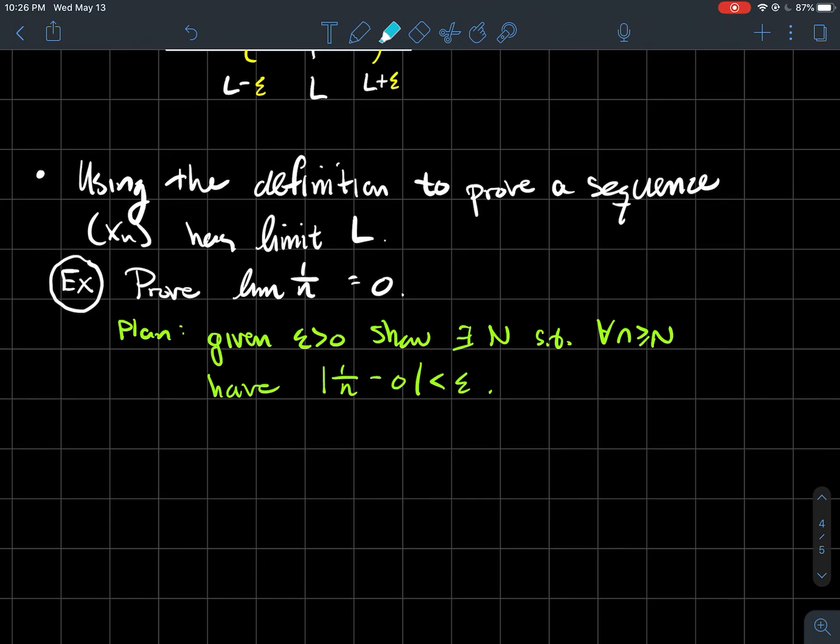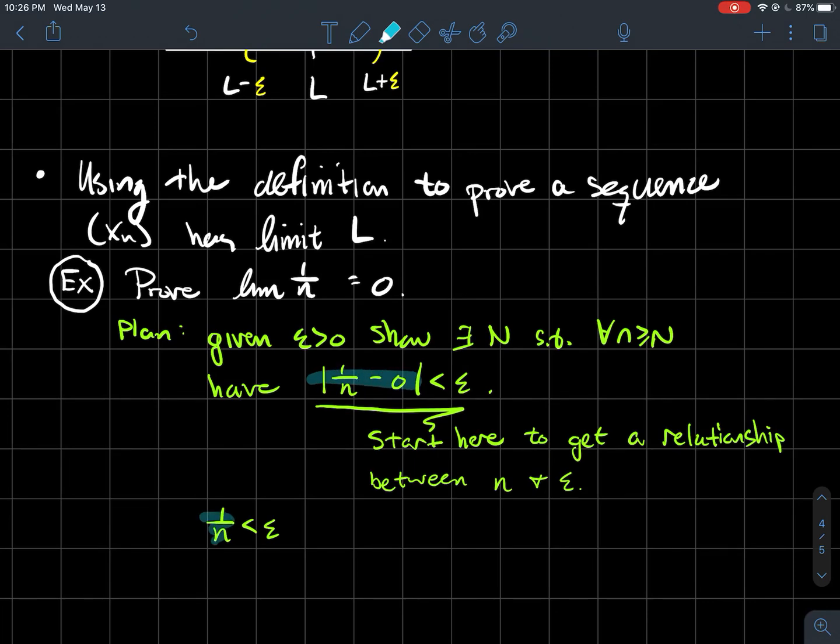The plan: given epsilon greater than 0, show there exists a natural number N such that for all n ≥ N, we have |1/n - 0| < epsilon. Start here and get a relationship between n and epsilon. Simplify this absolute value: that's just 1/n < epsilon. Solve for n: that says n is larger than 1/epsilon.